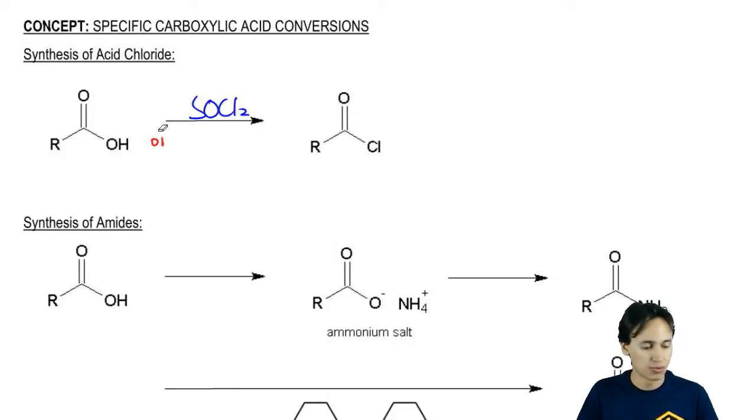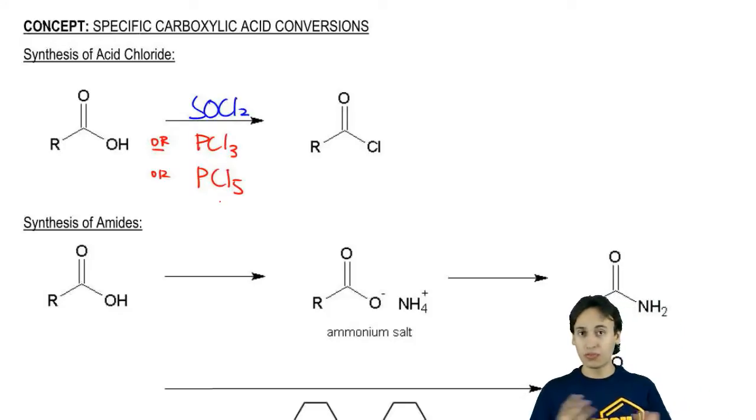We can also use PCl3 or PCl5. These reagents are full of chlorines and they're particularly good at turning a carboxylic acid into an acid chloride.